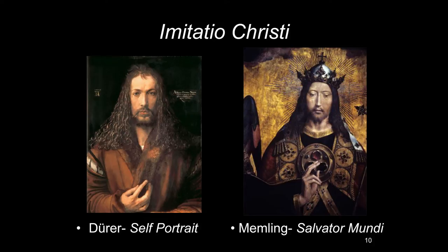If you look at the gesture in Dürer's self-portrait, it looks like he's taken the blessing gesture and turned it around, with two fingers pointing to himself, indicating himself. It's not quite a gesture of someone pointing to himself with one finger, or putting his full hand across his breast. It looks like he's just turned around the blessing gesture.